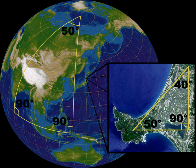Euclidean geometry, named after the Greek mathematician Euclid, includes some of the oldest known mathematics, and geometries that deviated from this were not widely accepted as legitimate until the 19th century. The debate that eventually led to the discovery of the non-Euclidean geometries began almost as soon as Euclid's work Elements was written. In the Elements, Euclid began with a limited number of assumptions — 23 definitions, 5 common notions, and 5 postulates — and sought to prove all the other results. The most notorious of the postulates is often referred to as Euclid's fifth postulate, or simply the parallel postulate.